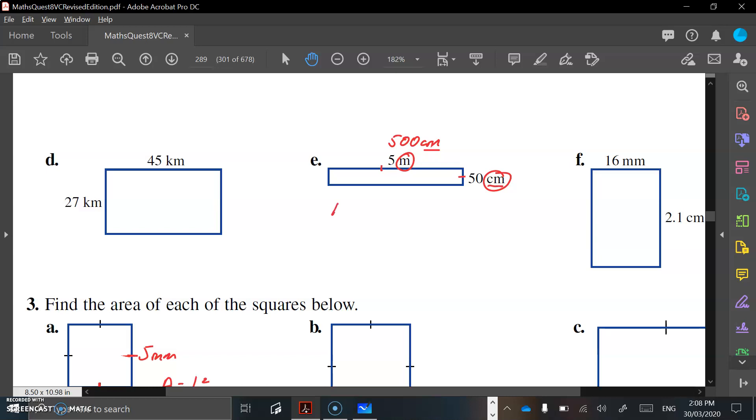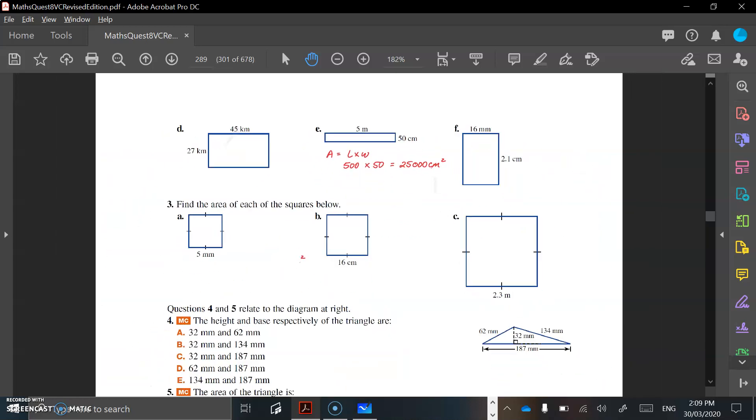So the area of a rectangle is the length times the width, and that's going to be 500 times 50, which is going to give us 25,000 centimeters squared. So it's really important that you put the correct unit of measurements into your question and into your answer.